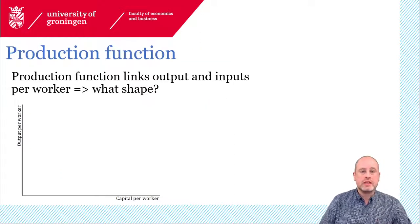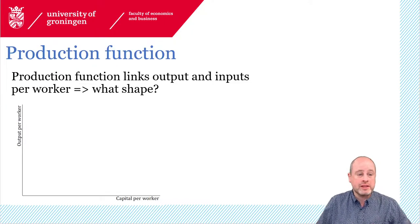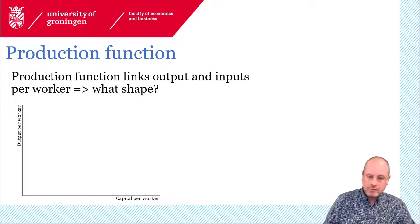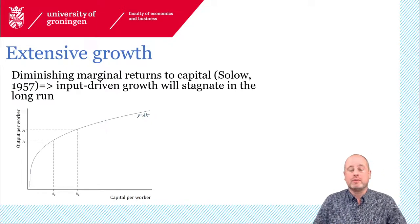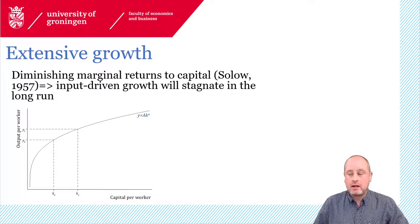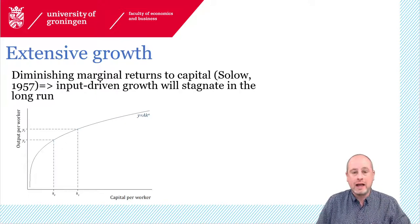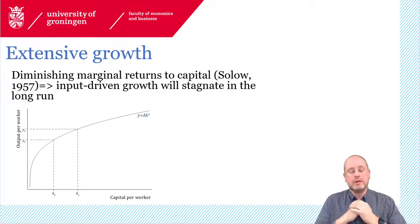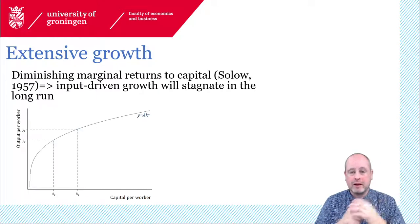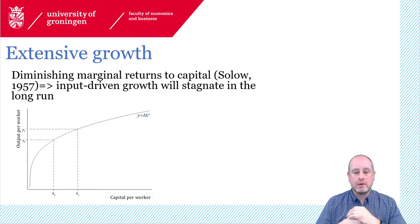If we want to know this, we should look at the production function, because that tells us the link between outputs, inputs, and productivity. In this setup we have capital per worker on the horizontal axis and output per worker on the vertical axis. The equation is that output Y is a function of productivity A and capital per worker K. The important feature is diminishing marginal returns to capital, closely following the modeling by Solow in the 1950s.